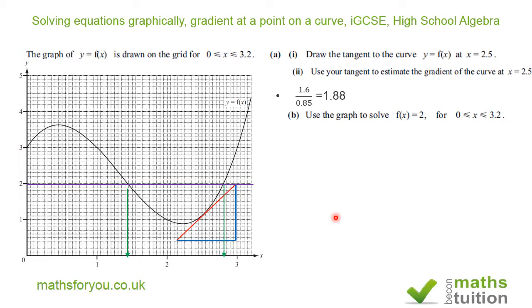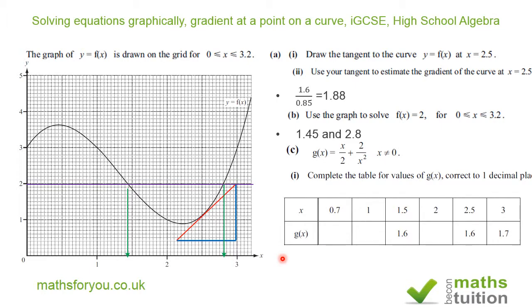Moving on to part C, it says g(x) = x² + 2/x² where x ≠ 0, and it says complete the table for values of g(x) correct to one decimal place. When x = 0.7, y = 4.4, and when x = 1, y = 2.5.